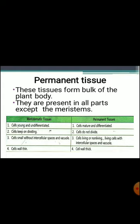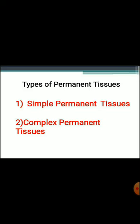To compare: meristematic cells are young and undifferentiated, while permanent tissue cells are mature and differentiated. Meristematic tissue cells keep on dividing, while permanent tissue cells do not divide. In meristematic tissue the cell wall is thin, while in permanent tissue the cell wall is thick. Permanent tissues form the bulk of the plant body and are present in all parts except the meristem. Permanent tissues are of two main types: simple permanent tissue and complex permanent tissue.